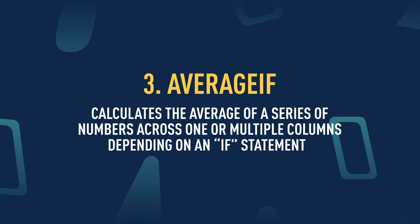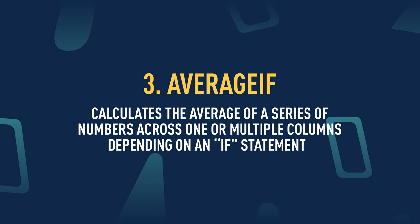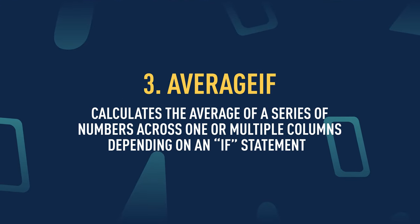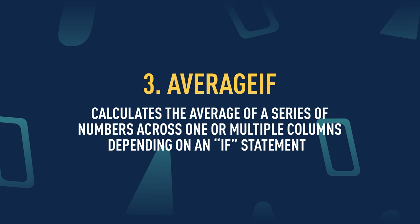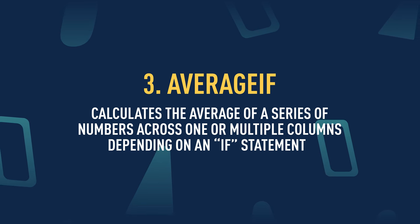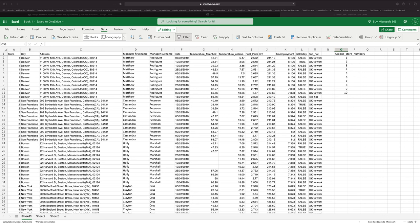Now let's take a look at the AVERAGEIF statement. The AVERAGEIF function calculates the average of a series of numbers across one or multiple columns depending on an IF condition — a true/false evaluation. We've already worked with the IF statement, so let's incorporate that logic into AVERAGEIF. I'm going to use AVERAGEIF to calculate the average temperature for each unique store in our dataset. We've previously calculated the unique stores using the UNIQUE function, so I can create a column next to the unique store numbers.